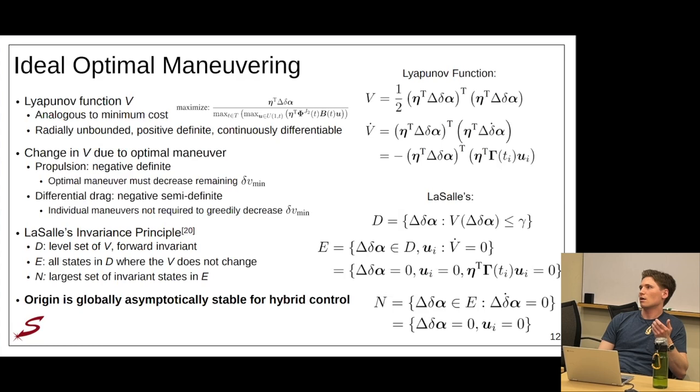To prove that it is asymptotically stable, we can instead apply LaSalle's invariance principle, given a set D, which is a level set of Lyapunov function V and its forward invariant, a set E, which is all states in D where V does not change, which is basically the origin of pseudo-state space when the reconfiguration is complete, non-maneuvering, and maneuver effects that do not change the minimum cost of the reconfiguration. The set N is the largest set of invariant states in E, which again is just the end of the reconfiguration and the non-maneuvering spacecraft, which then proves that the origin is globally asymptotically stable for all forms of hybrid control under ideal optimal maneuvering.